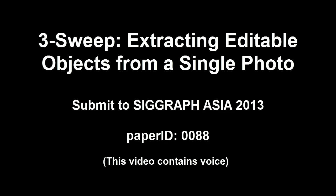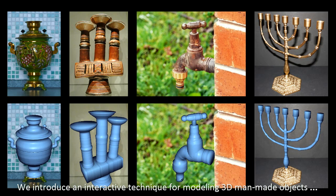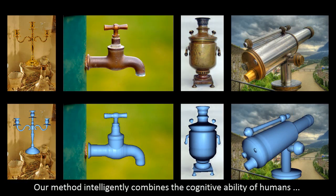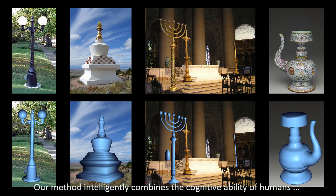We introduce an interactive technique for modeling 3D man-made objects by extracting them from a single photograph. Our method intelligently combines the cognitive ability of humans with the computational accuracy of the machine.